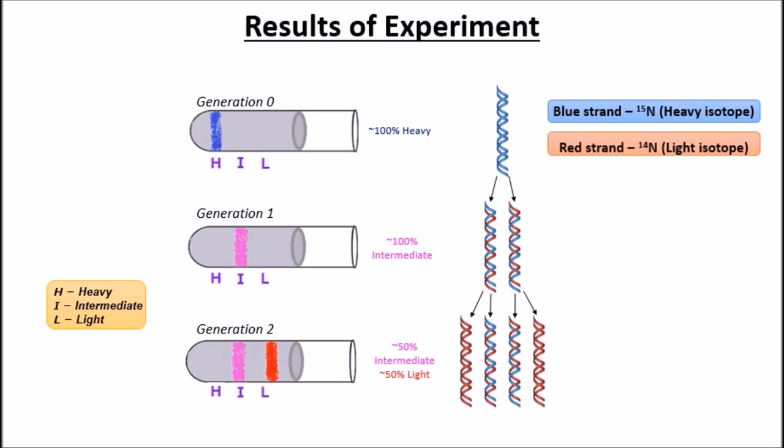In conclusion of the experiment, the only model that could explain this was the semi-conservative model. This is how the Meselson-Stahl experiment proved that the semi-conservative model was indeed correct.